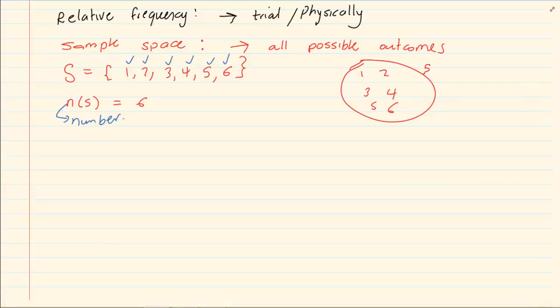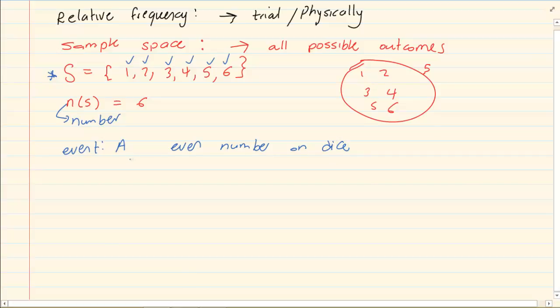What is an event? An event is something that is going to come out of your sample space. So I could have an event, let's call it A, which is all the even numbers. So if I am talking of event A with all the even numbers on a dice, then what do I have? I have A is equal to two, four and six. Now the n(A), so in other words the number of them is three. There are three choices.